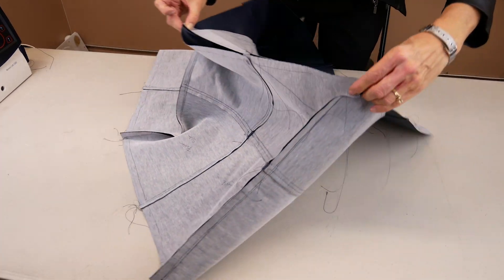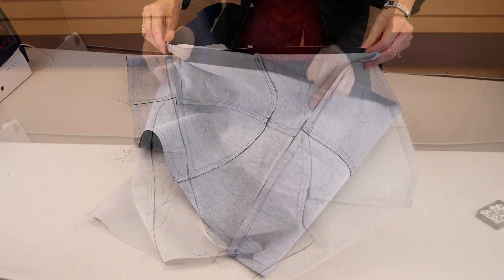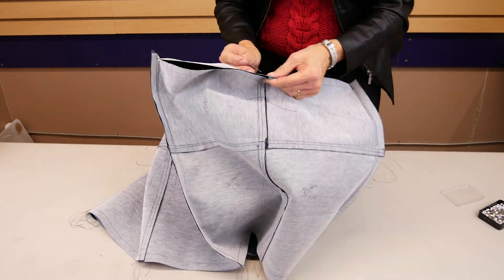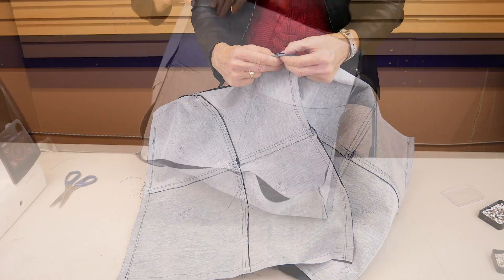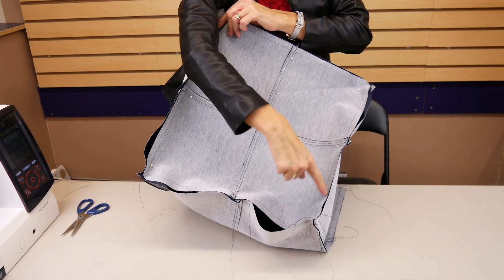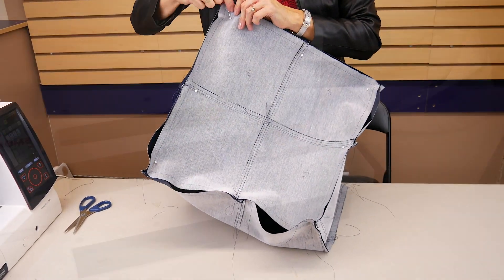Now place the final square right sides together with the sides, and pin or clip the corners to match. Stitch around, taking care not to stretch the fabric and keeping the corners matched.